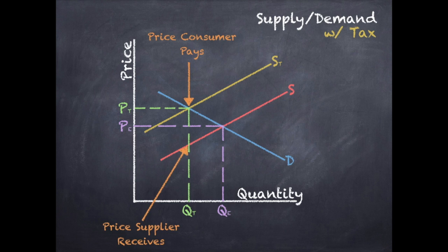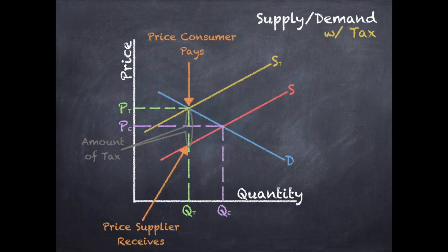What is that difference going to be? Well, if the consumer is paying $10 for something and the supplier is only receiving $5, where's that additional $5 going? That's the money going to the government — that money is the amount of the tax. That is all we need to know on this graph right now.